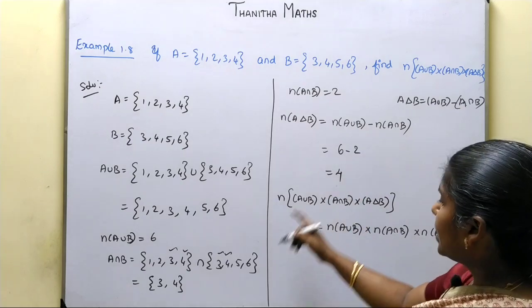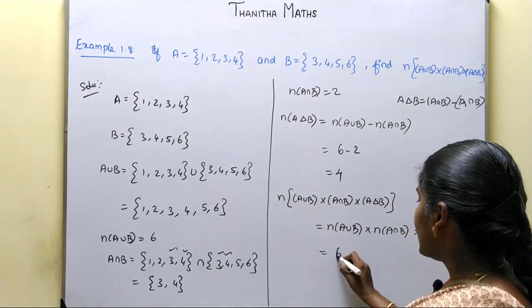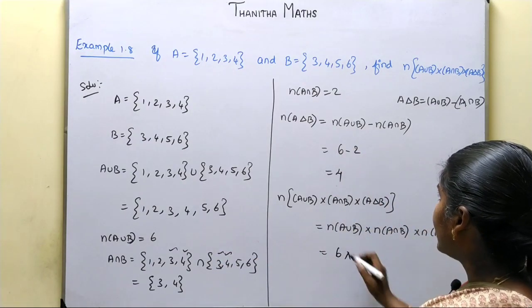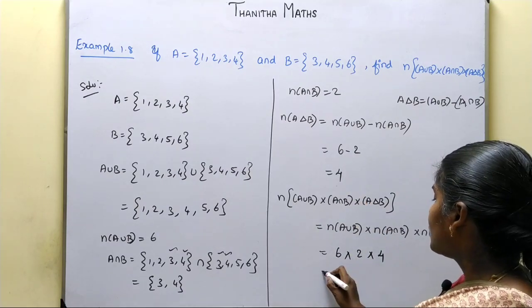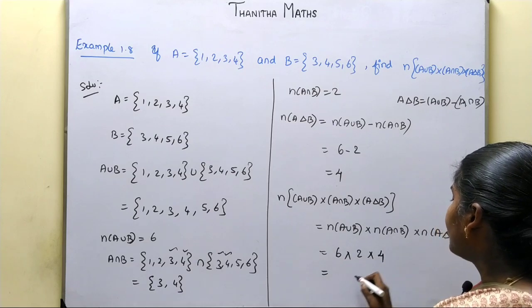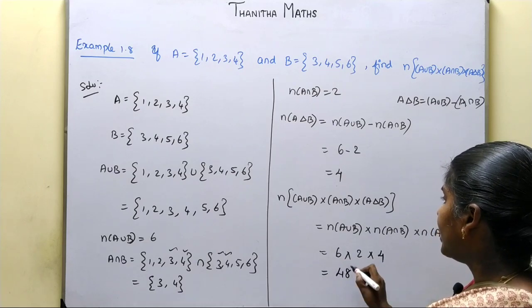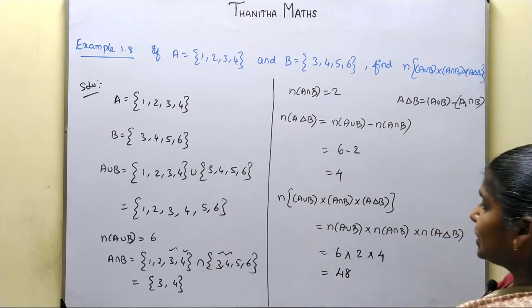Now, n(A∪B) × n(A∩B) × n(A△B) = 6 × 2 × 4. 6 times 2 is 12, 12 times 4 gives us 48. So the required answer is 48.